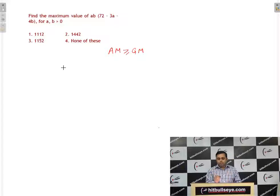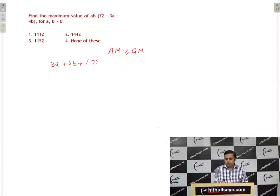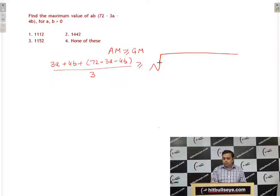So, I will take three numbers, 3A, 4B and 72 minus 3A minus 4B. And their arithmetic mean will be equal to sum of these numbers divided by 3 and their geometric mean is equal to cube root of their product.